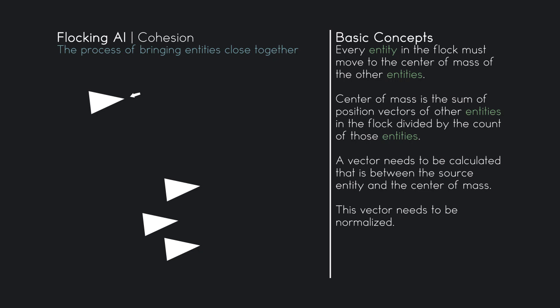Let me throw up some position values here. This entity has a position of one comma three — its x position is one, its y position is three. This entity has a position of four comma six. The third entity has a position of three comma seven. The last entity has a position of four comma nine. So these are the position values of each entity in the flock.